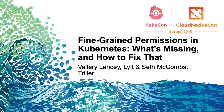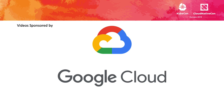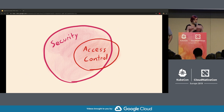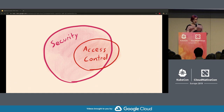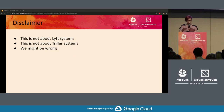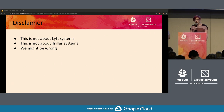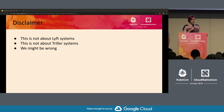Today we're going to speak on access control in Kubernetes, specifically what's missing and how to fix it. Because access control is a security topic and security is extremely important, this is not a talk about how Lyft or Triller runs systems. These are our personal opinions as operators, largely working with small companies and small clusters. We are generalists with Kubernetes — we're not security experts. We may be wrong.